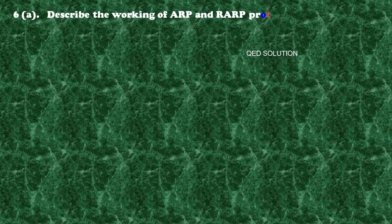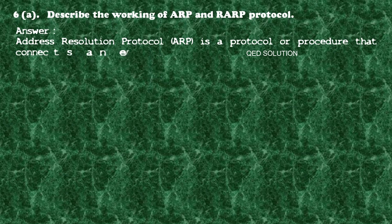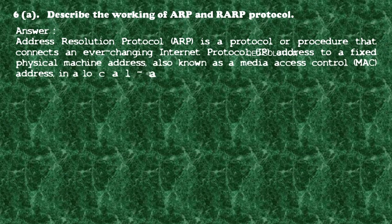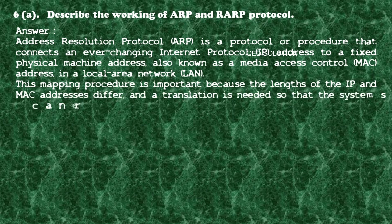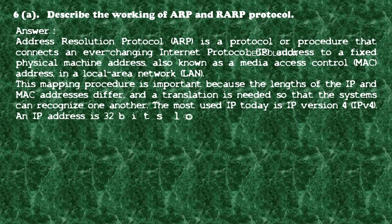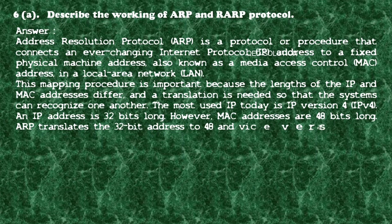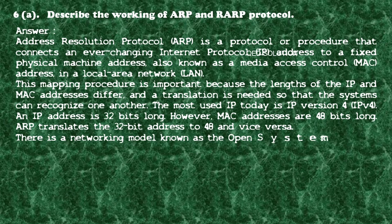Question number six (a): Describe the working of ARP and RARP protocol. Answer: Address Resolution Protocol (ARP) is a protocol that connects an ever-changing IP address to a fixed physical machine address, also known as a MAC address, in a local area network (LAN). This mapping is important because the lengths of IP and MAC addresses differ — IPv4 addresses are 32 bits long while MAC addresses are 48 bits long — and ARP translates between them.